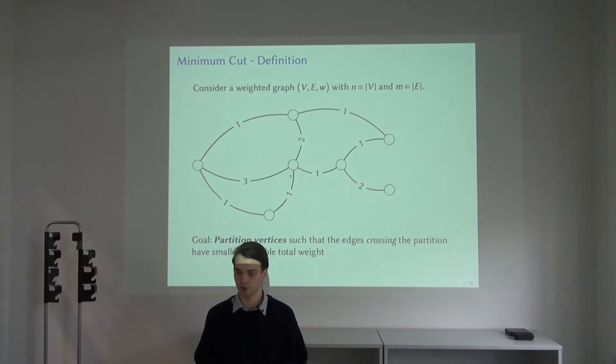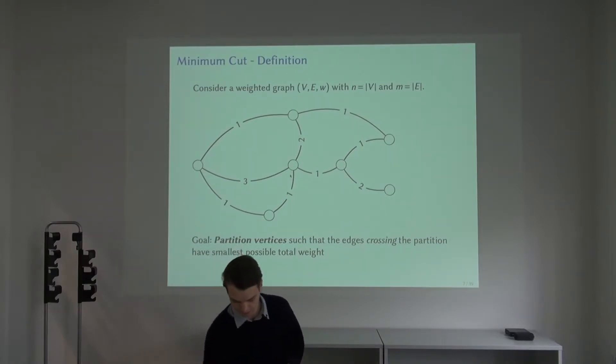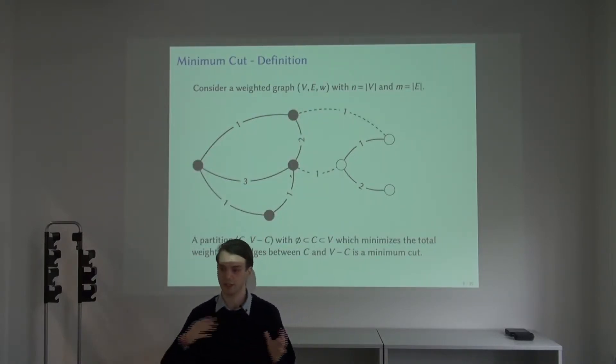A cut is a partition of the vertices of the graph into two non-empty sets, and then we look at the edges which have endpoints in both partitions. These cross the cut, and if we find a cut with smallest possible weight of all of the crossing edges, then this is a minimum cut. We want to cut as little weight as possible.